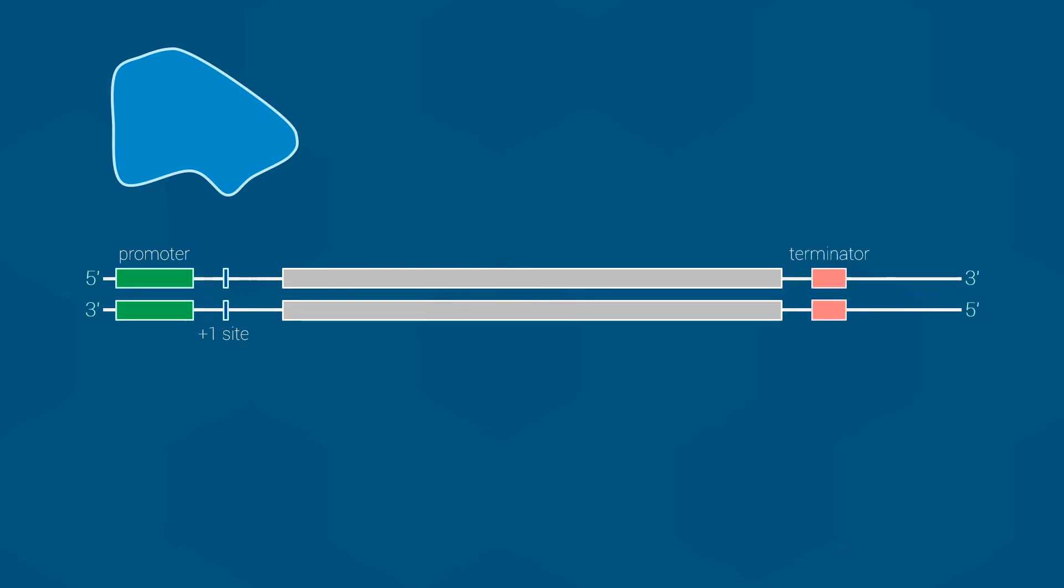Finally, a terminator sequence is needed to tell the RNA polymerase when to stop reading the DNA. By the way, these DNA elements together with the information code are the basic features of what we call a gene.